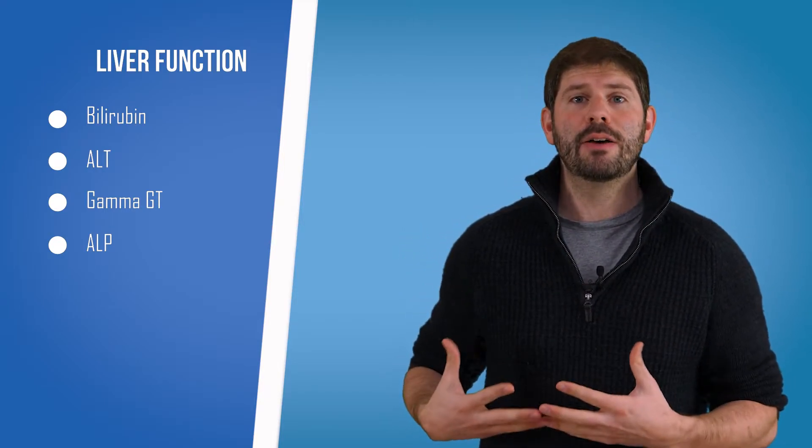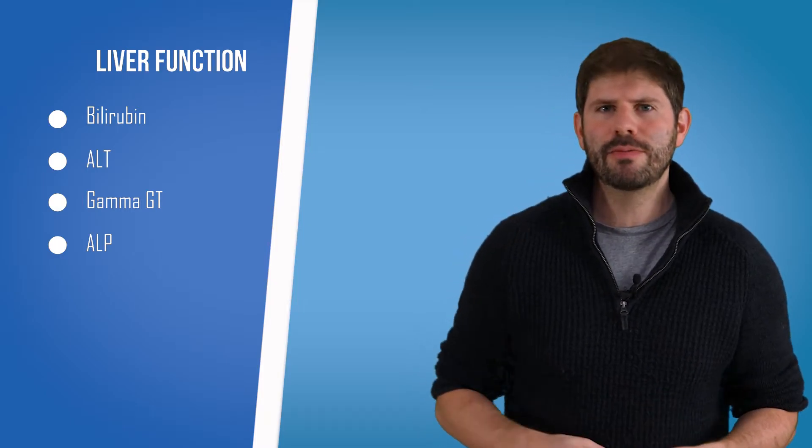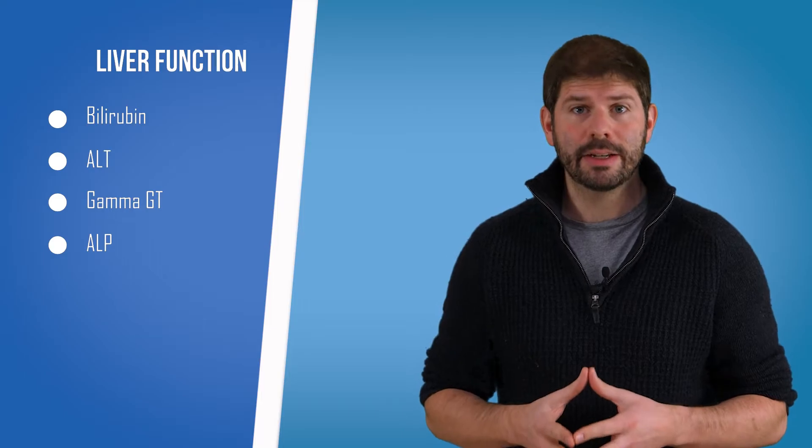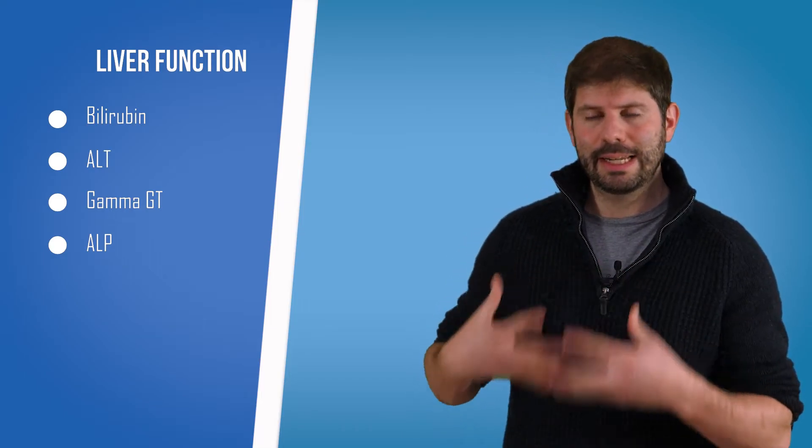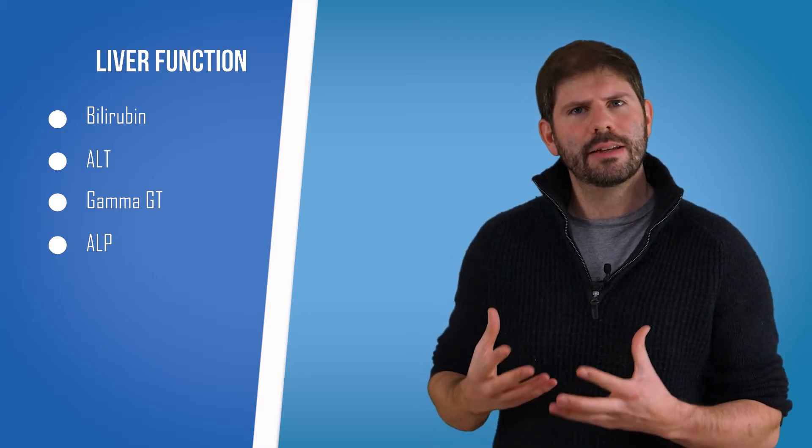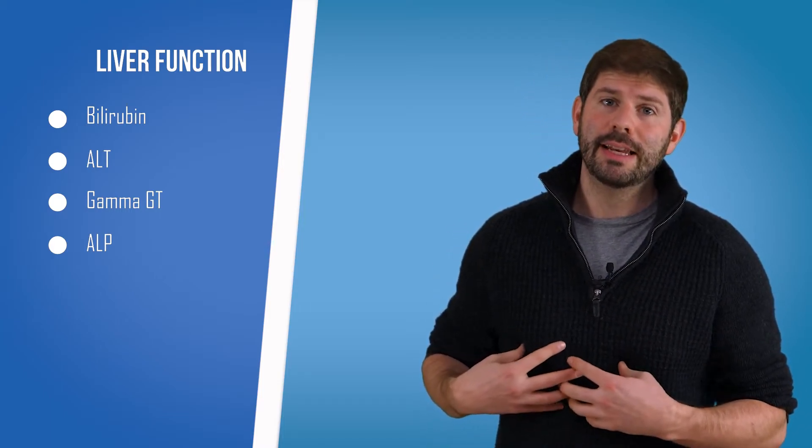ALT is an enzyme that's found in the liver primarily. It's also found in the muscles, the heart, and the kidneys, but it's mainly in the liver. When your liver gets damaged, it releases ALT into the bloodstream. So when your ALT goes up, it's an indication that there might be a bit of damage going on in the liver.